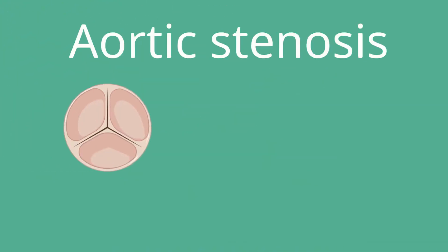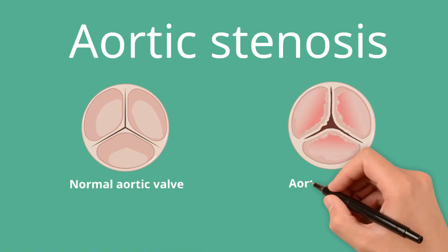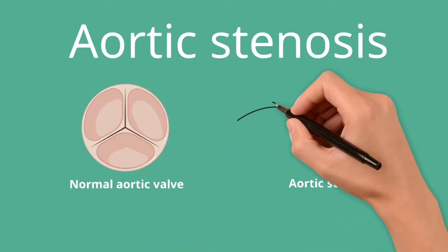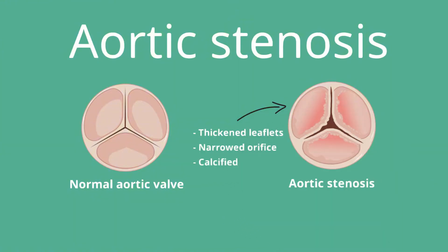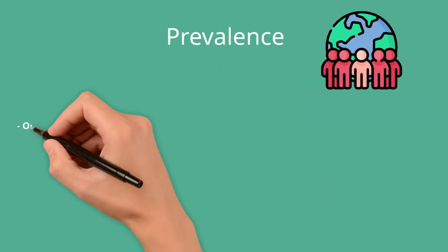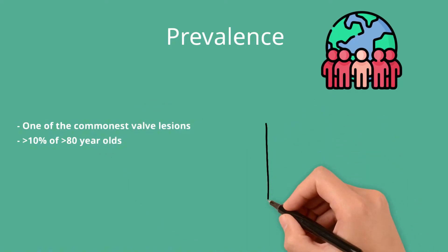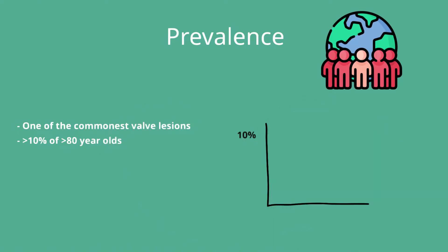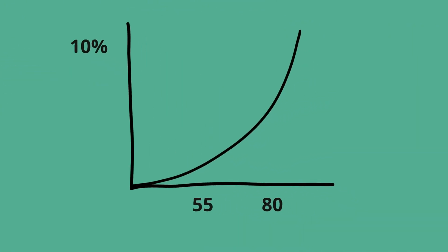Aortic stenosis describes the thickening and calcification of the aortic valve leaflets in a way that restricts their opening in systole, which has the effect of reducing the size of the valve orifice. This obstructs the flow of blood leaving the LV. Aortic stenosis is one of the commonest valve lesions, affecting up to 10% of the population above 80 years of age in the USA and Europe, and is frequently encountered in both clinical practice and in exams at all levels.